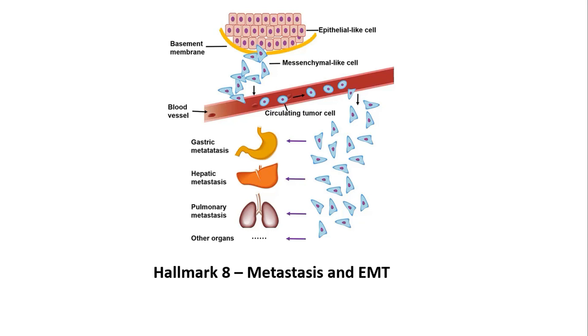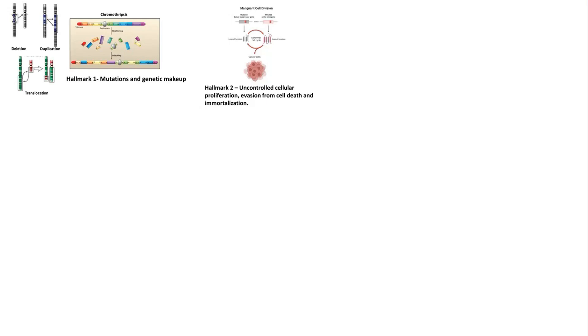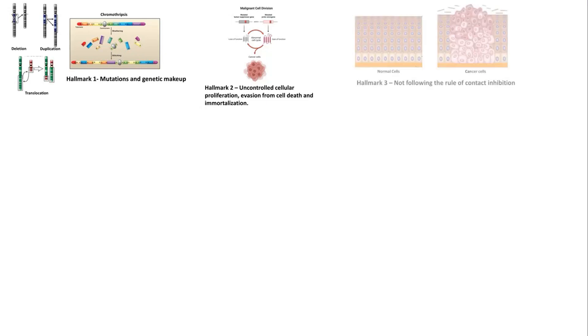Now let's summarize the hallmarks of cancer through a short story. Imagine there was a group of normal cells living their life peacefully. One day, due to some mutations, they transformed into cancer cells proliferating uncontrollably. These mutations gave those cells extra perks like evasion from cell death, uncontrolled proliferation, and gain of immortality. They started enjoying this new uninhibited lifestyle — no regulation could control them, no gene could stop their proliferation. They were just dividing and thriving.